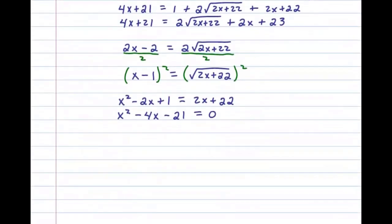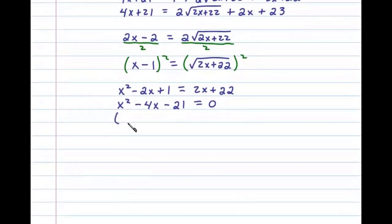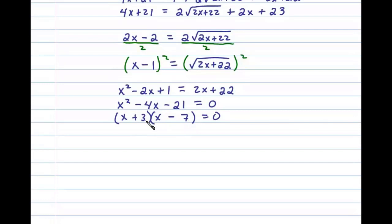Now at this point we can factor this quadratic. We have (x)(x), and since 3 times 7 is 21, if we make the 7 negative and the 3 positive, we'll have negative 7x and a 3x, which adds up to negative 4x. Also positive 3 times negative 7 is negative 21, so it factors. Then we set each factor equal to 0.